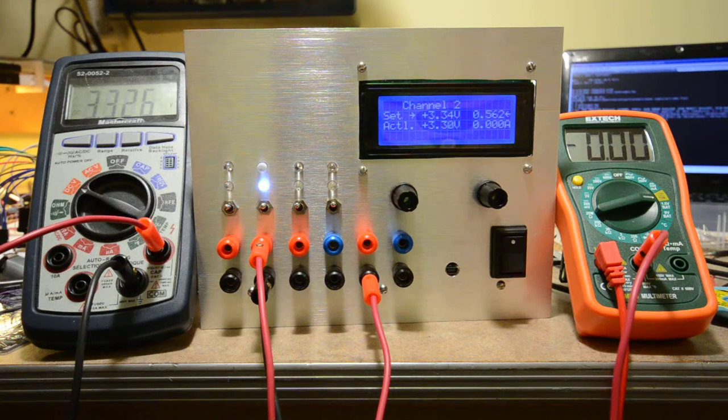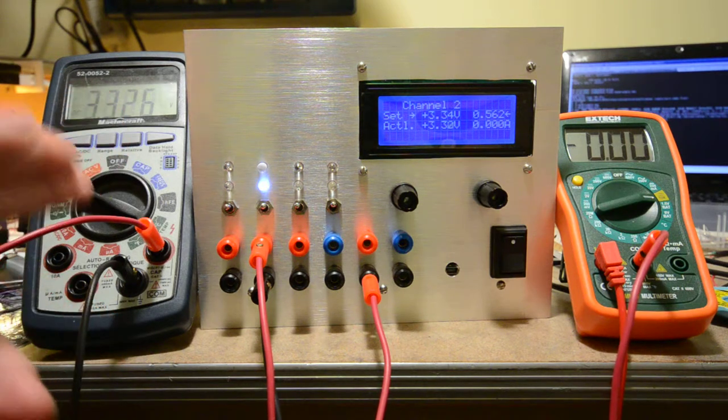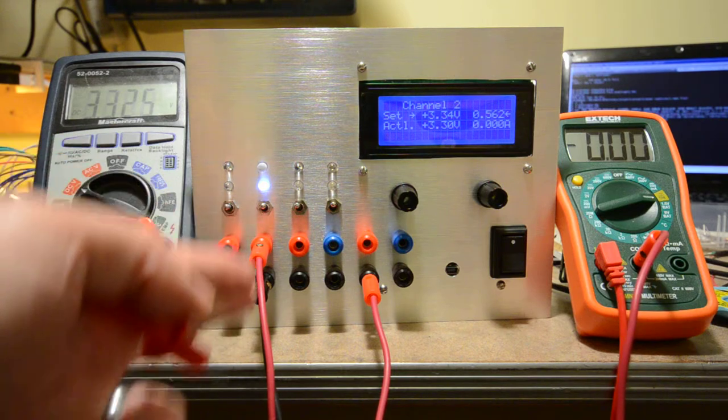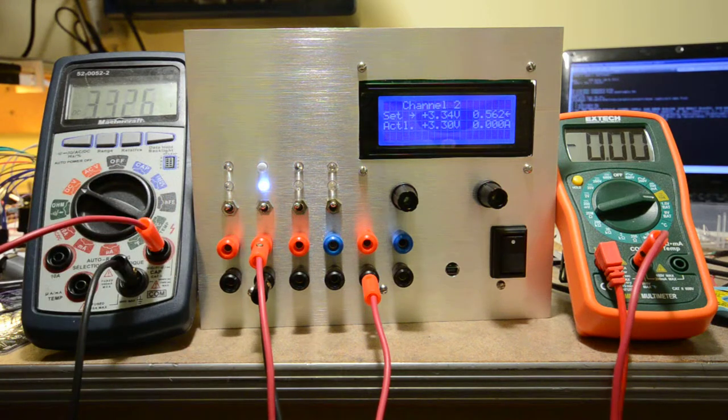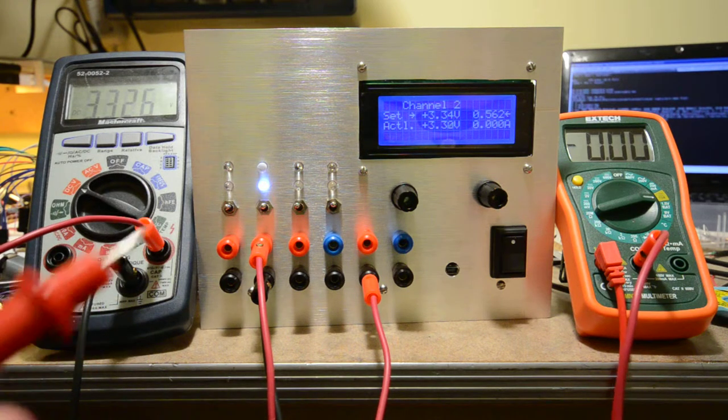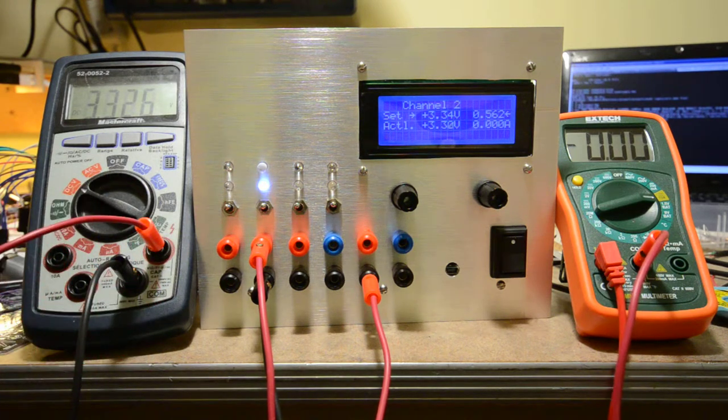Right now you can see on the multimeter on the left is the actual voltage being measured. The multimeter on the right is the actual current, which is currently not connected—this is the other lead of the current.